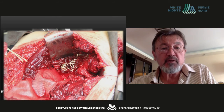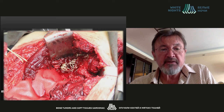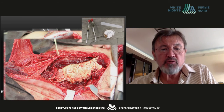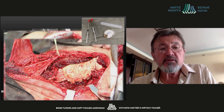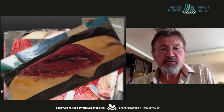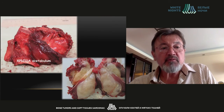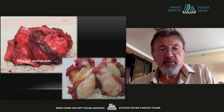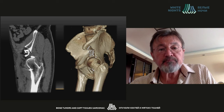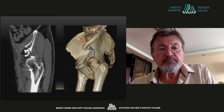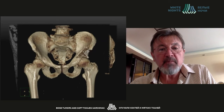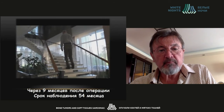To restore the acetabulum dome, we used screws linked together with wire fixation. Above, we placed a composite bone material which is X-ray negative and X-ray translucent. This is the final view of the surgical field before closure. You can see the dome of the acetabulum in the removed block specimen. This is the 3D reconstruction — you can see the screws — and this is how we restored the acetabulum and its upper part.